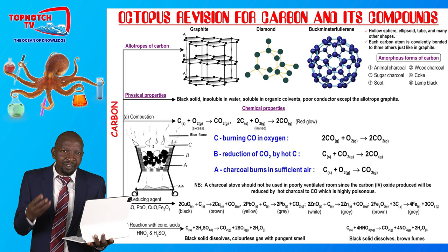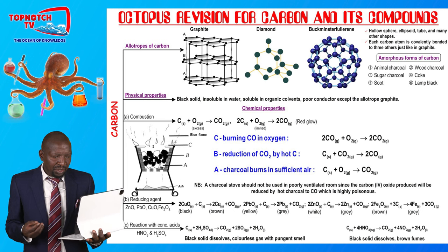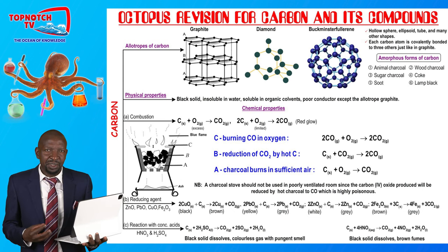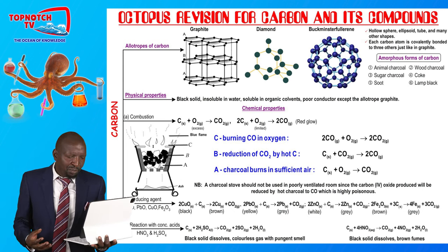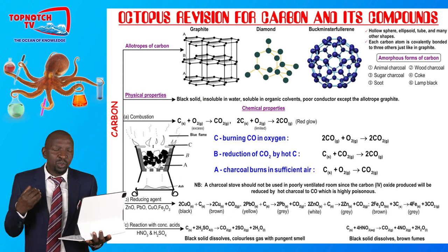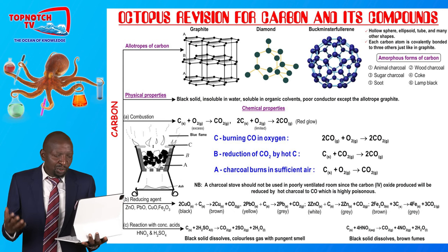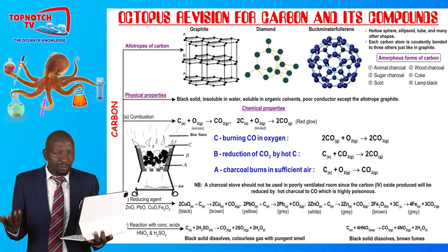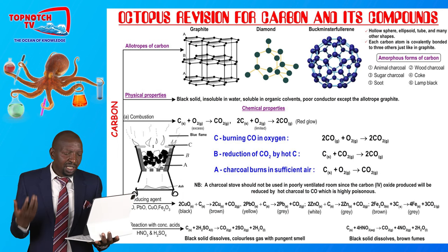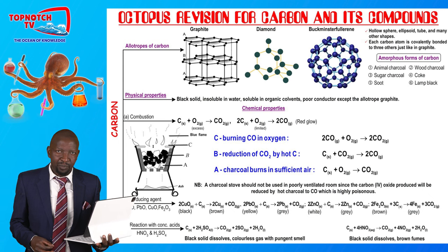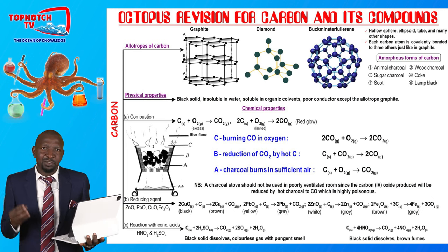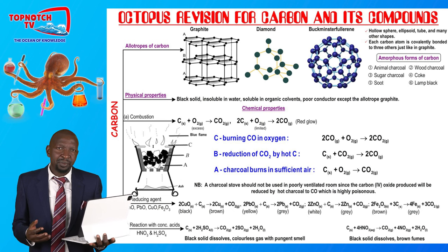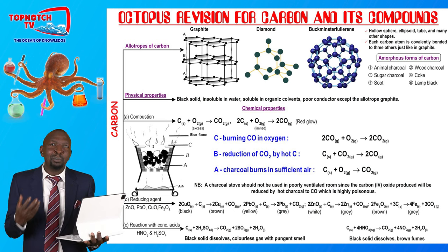Then we have the amorphous forms of carbon — these are forms of carbon that have no definite shape. These include carbon black, wood charcoal, animal charcoal, sugar charcoal, coke, and lamp black. These amorphous forms of carbon don't have a definite shape, which is why they are called amorphous.